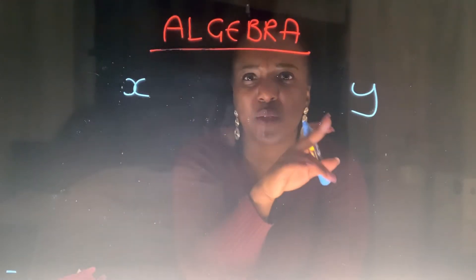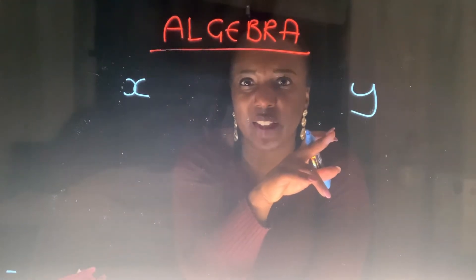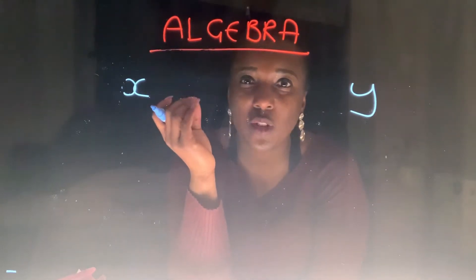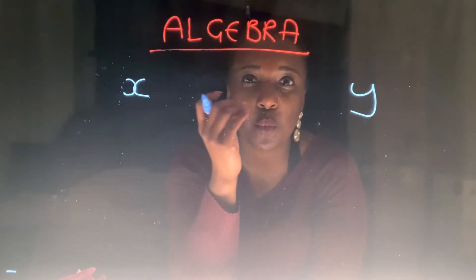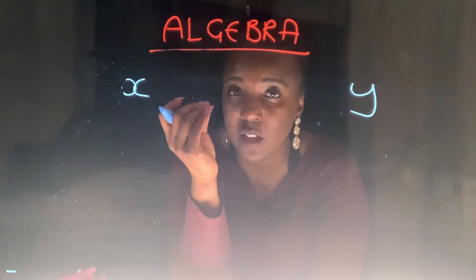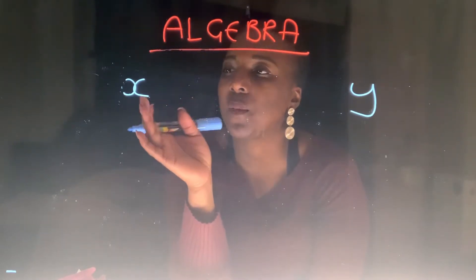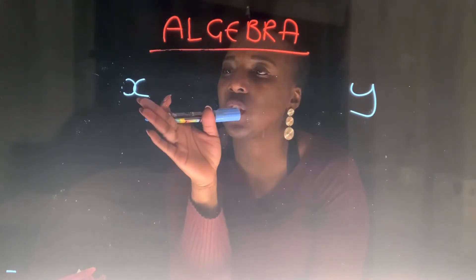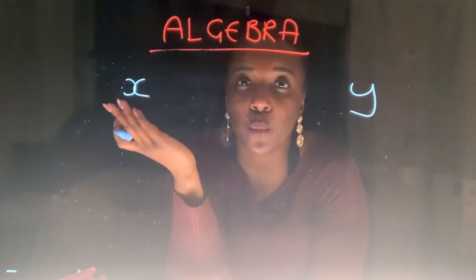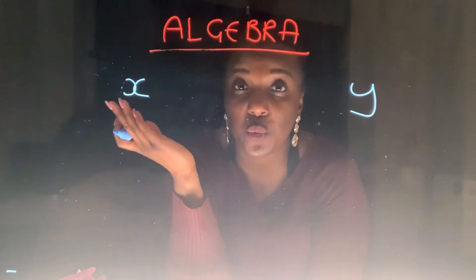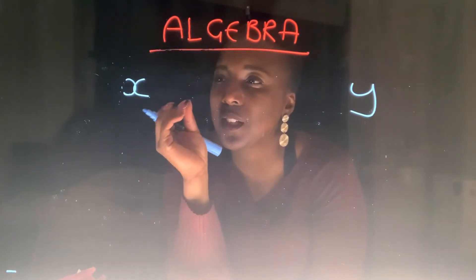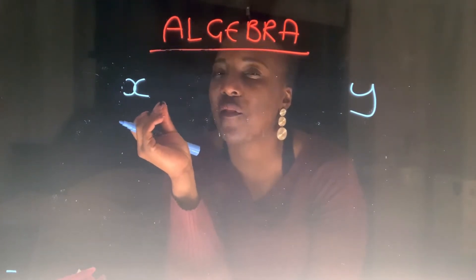I've got X here and I've got Y. Now, we see this a lot in algebra, but what does X, Y, A, B have to do with maths? Well, quite simply, I want you to think of X, Y, A, B, N, T — whatever letter they use — as a representative for a specific value.